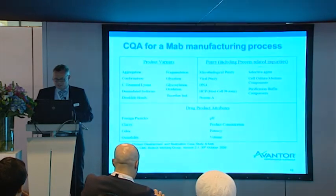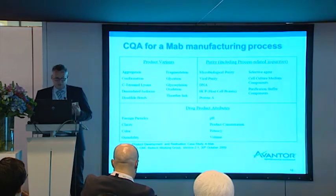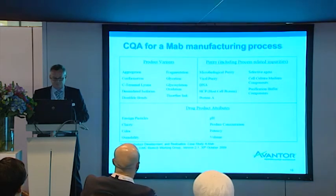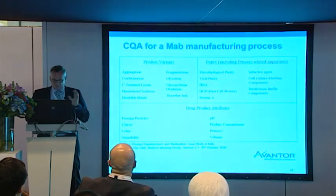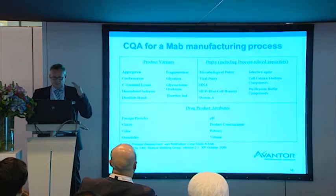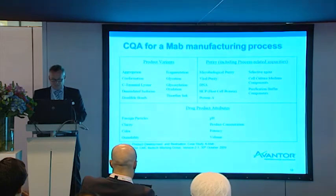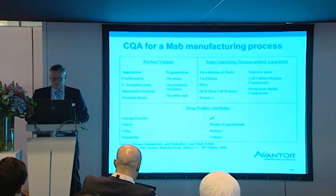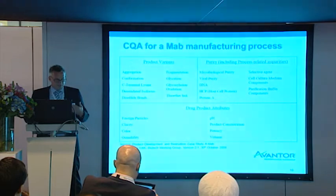This is an example of the quality attributes of a monoclonal antibody purification process. In this process, it is very important to have control on aggregates and on glycosylation. At every parameter and every variant, you have to describe very thoroughly in detail to understand what the influence is on the end product — meaning you need to define analytical controls in order to have control over these variants.